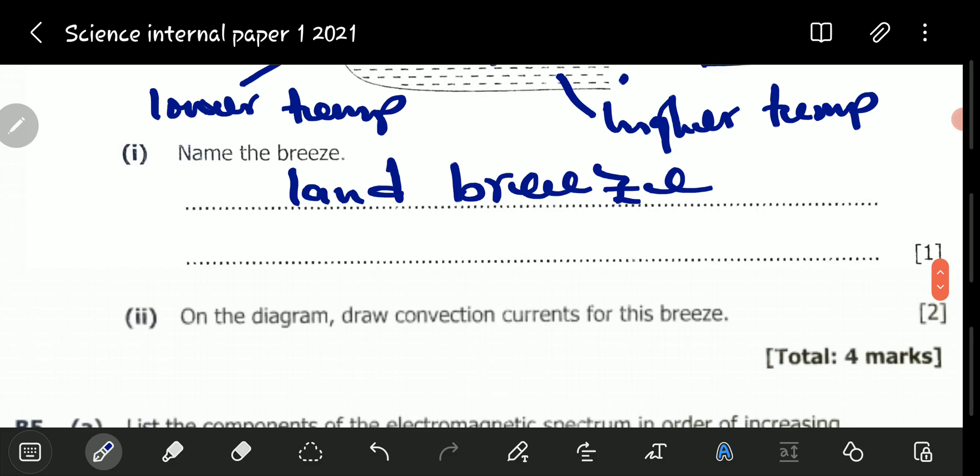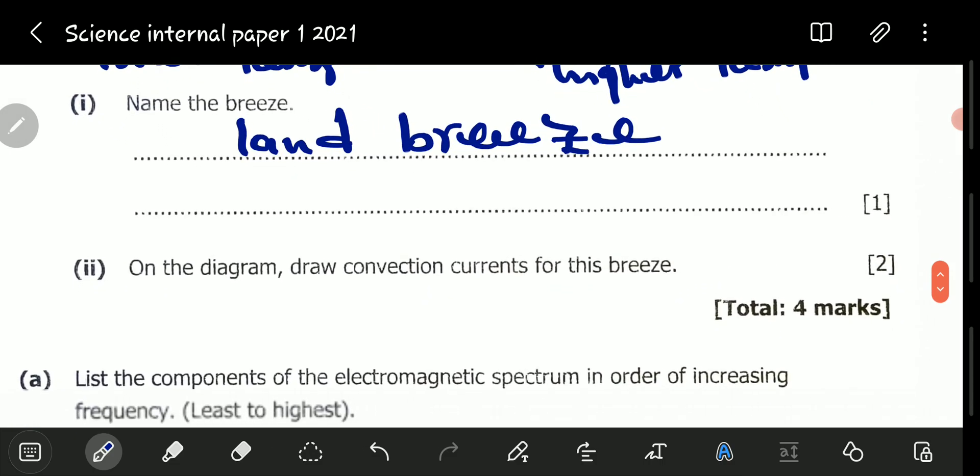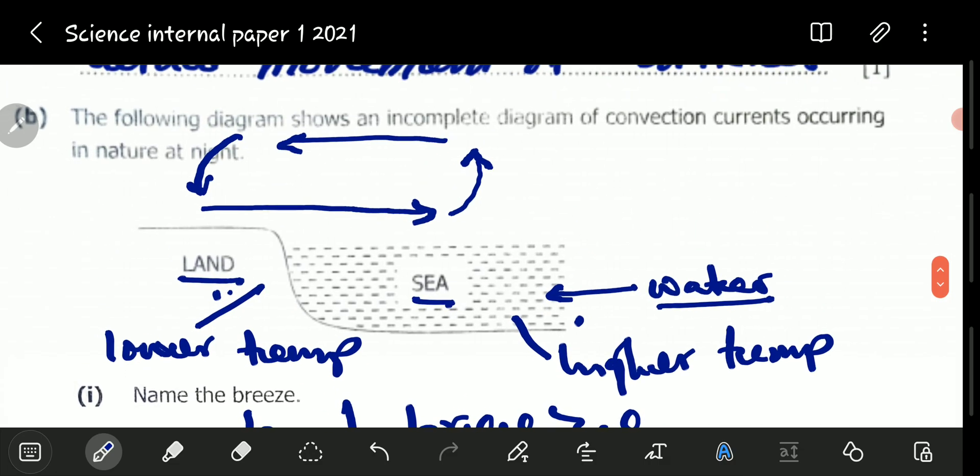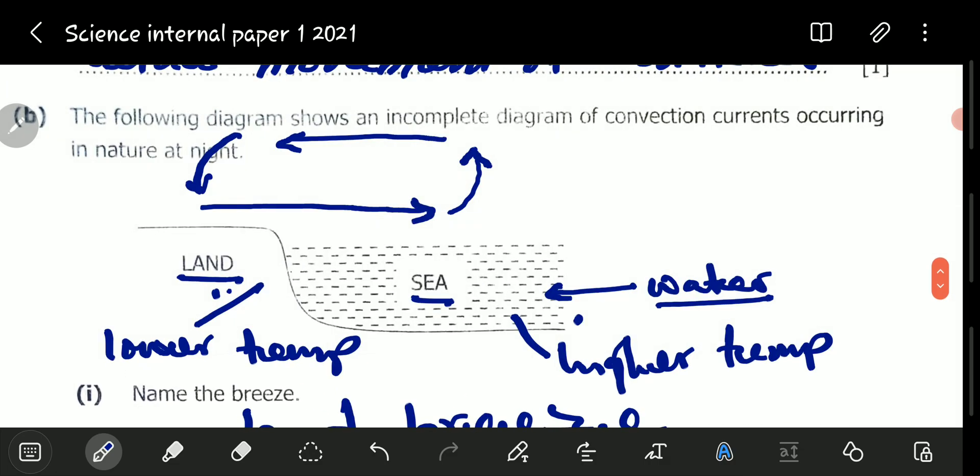We now go to B2. On the diagram, draw convection current for this breeze. We've already done that. That is our convection current.